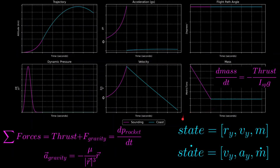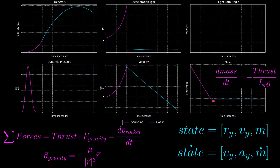Using initial conditions of zero altitude, zero velocity, and some arbitrary mass, we return to these plots to see the simulation results. Starting with mass versus time, we see it is linearly decreasing while the rocket is thrusting. This is because thrust, ISP, and g are all constant values, making their ratio a constant — and when the derivative of a function is constant, the function itself is linear. Once the rocket cuts off thrust, mass remains constant since no propellant is being expelled.